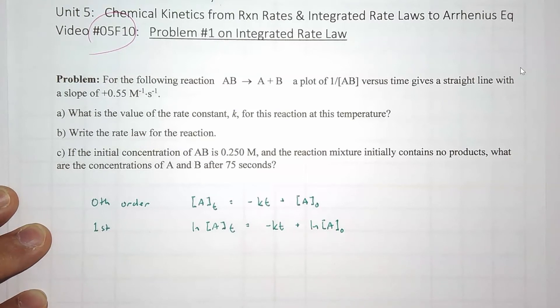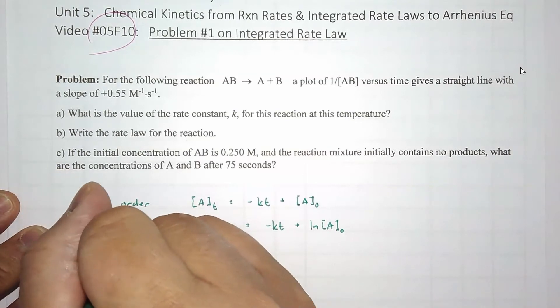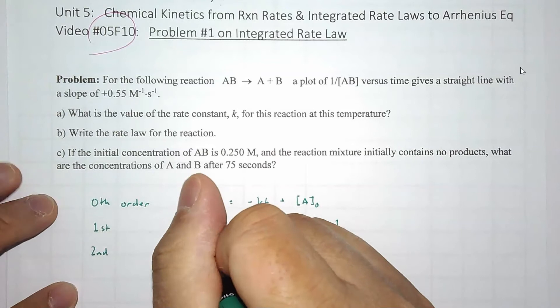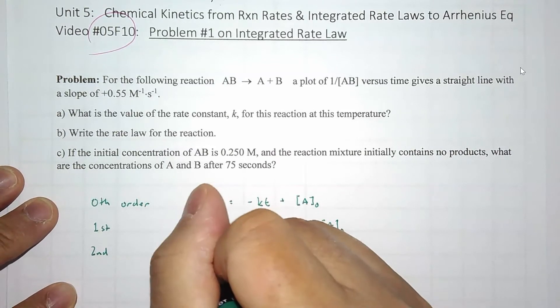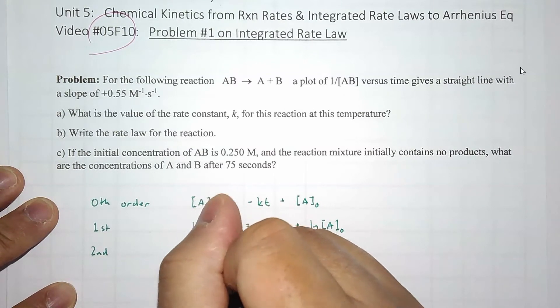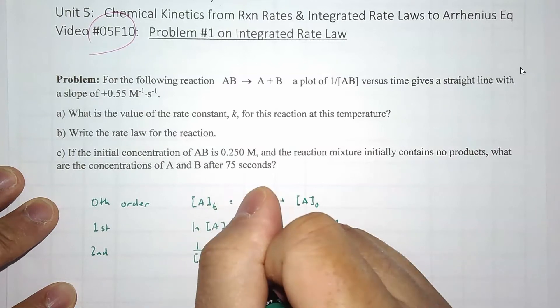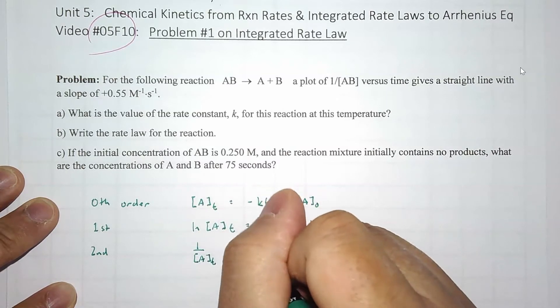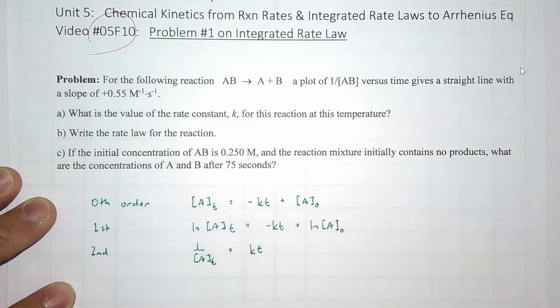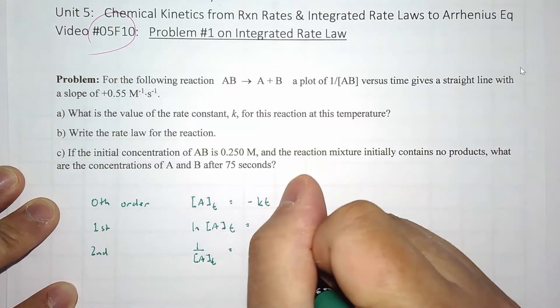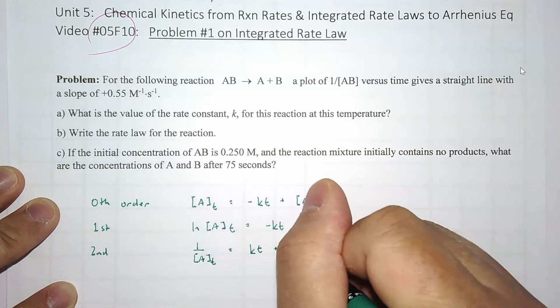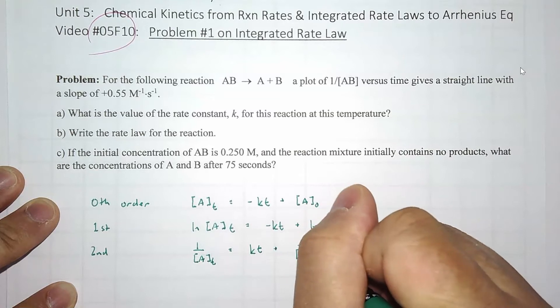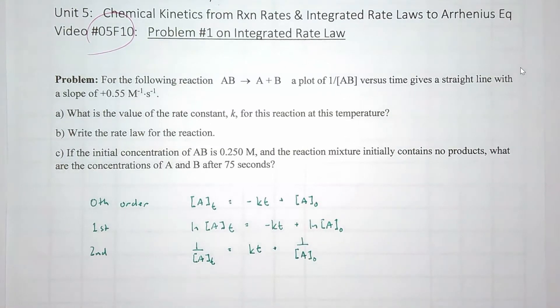And then finally for second order, we have 1 over [A] equals, not negative this time, but just kt plus 1 over [A] at the initial concentration.